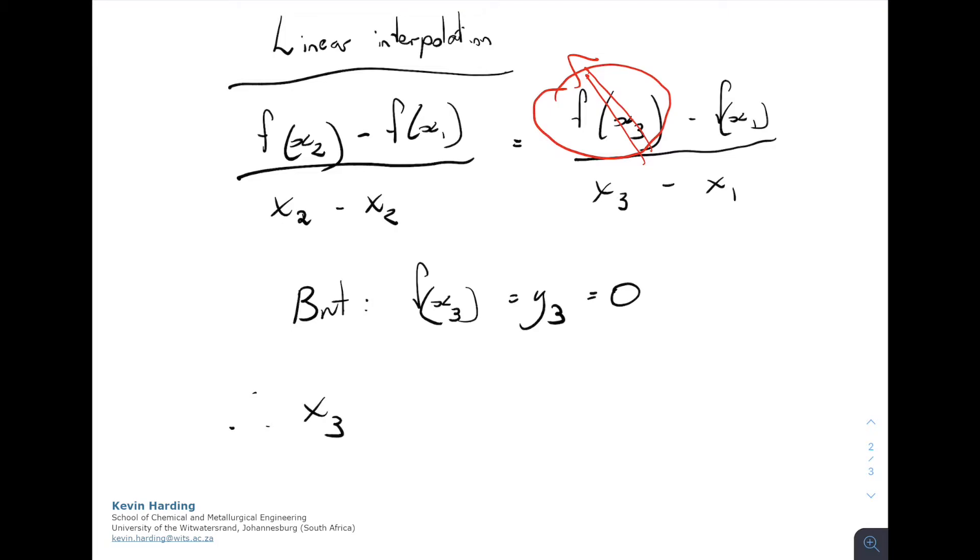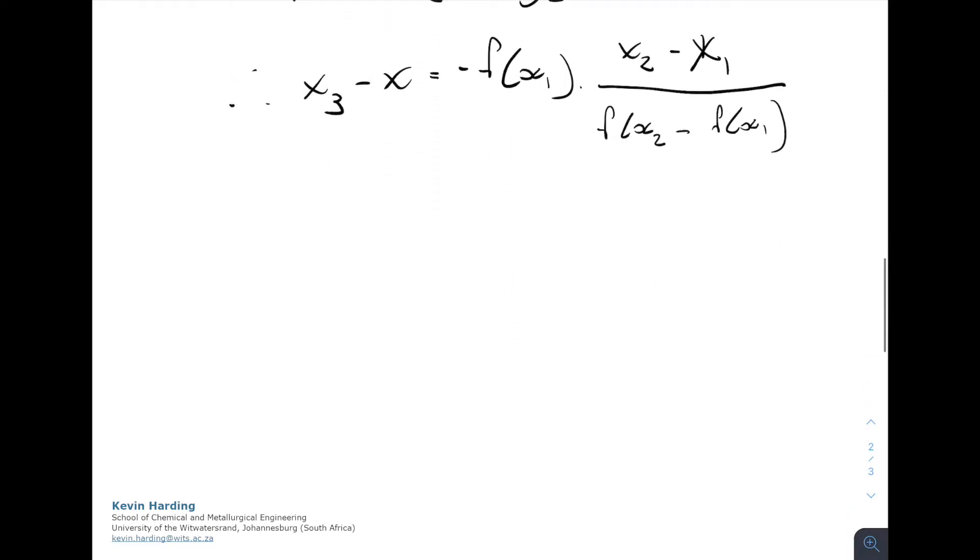Negative f of x1 multiplied by x2 minus x1 divided by the function values, minus x1 on the top, divided by f of x2 minus f of x1. And if we simplify that down all the way, and I'm not going to do all the steps, we get that, that's x3 minus x1.